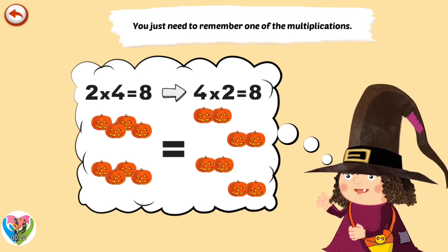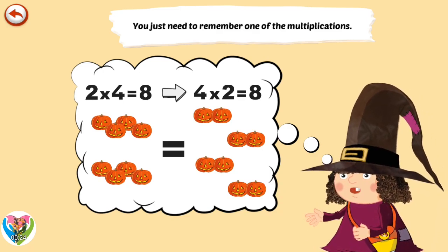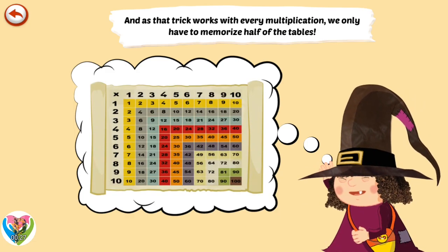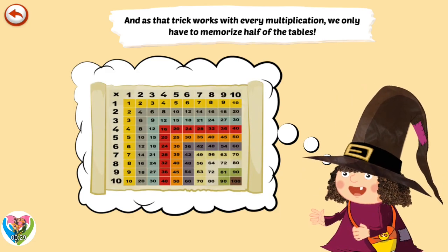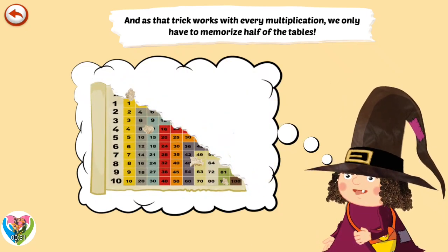You just need to remember one of the multiplications. And as that trick works with every multiplication, we only have to memorize half of the tables.